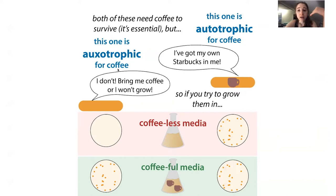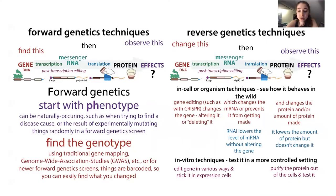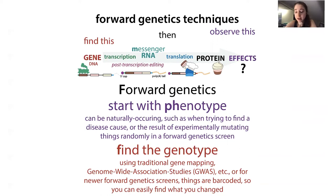So yes, it can be complicated. Let's get into more detail about how we actually go about doing these things. We'll start with forward genetics — this is the more classical genetics in the sense that, at least theoretically, that's the direction you're going. That doesn't mean the techniques we use are the same as those used a long time ago — we have more modern techniques.